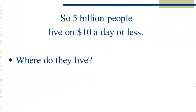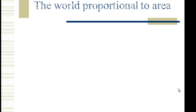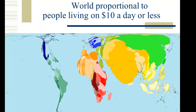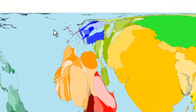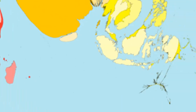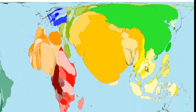5 billion people living on $10 a day or less — where do they live in the world? We're going to use software called World Mapper, which you can find at www.worldmapper.org to create your own maps. Here's the world proportional to area, and this is the world proportional to where people living on $10 a day or less live. You'll see that Western Europe has basically disappeared to nothing, the same with the U.S. and Canada. You can hardly see Australia or Japan. But India has ballooned, along with Pakistan, Bangladesh, Vietnam, and the Philippines. Africa is very visible.